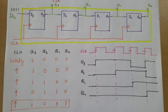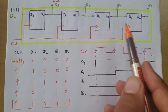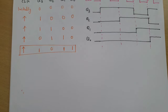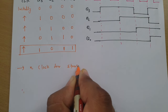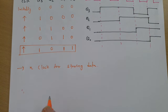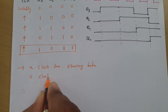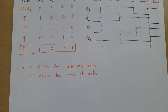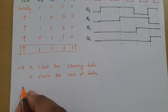Observing how many clocks are required: we need N number of clocks to store N-bit data in a Serial Input Parallel Output shift register. We need zero additional clocks to use the data, because we have parallel data available at the output side. Therefore, the total number of clocks required for complete processing is N.